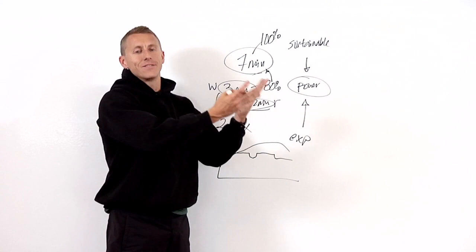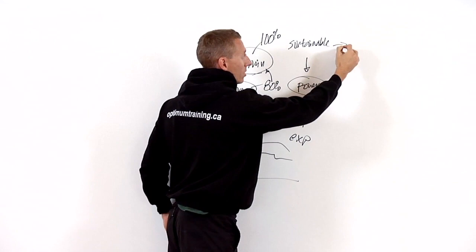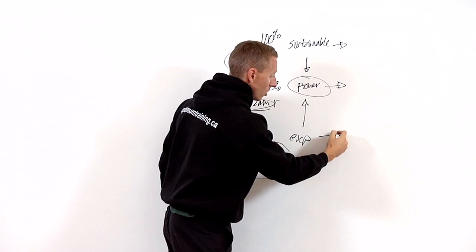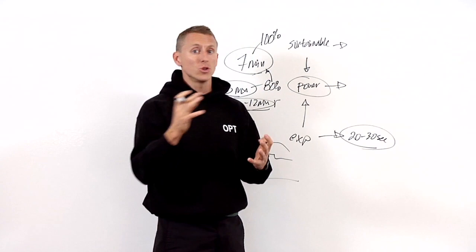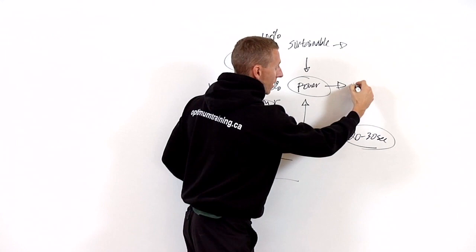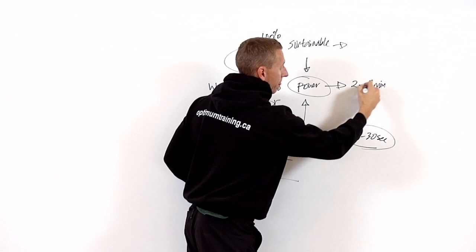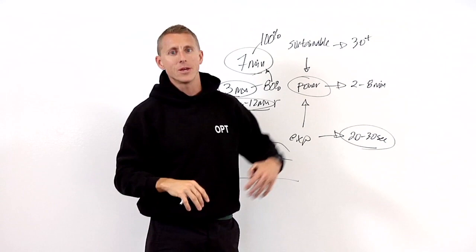There's basically ways of training that too. Doing sustainable energy system training, high power middle end energy system training, or explosive front end energy system training. And that could be in time frames like this, just to give you some indication. Something that lasts 20 to 30 seconds, where it's not going to be using a huge amount of blood volume, or what's called blood lactate, or lactate as a fuel source. Stuff in the middle ground that's going to be anywhere from two minutes to eight minutes. And then think sustainable like 30 plus minutes.